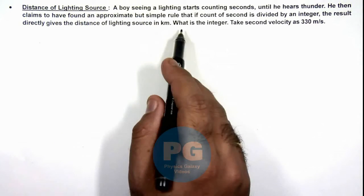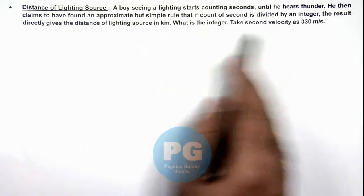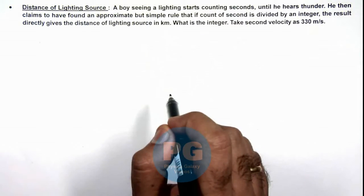We are required to find what is that integer, and sound velocity is given as 330 meters per second.